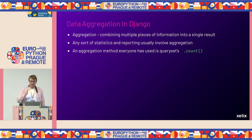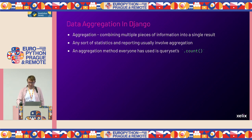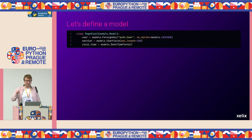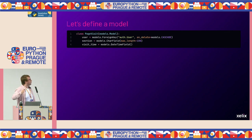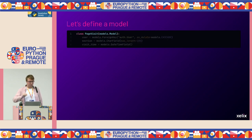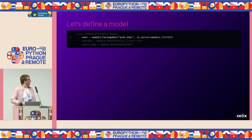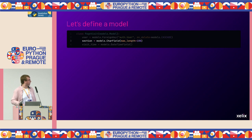Before we see examples of count and other aggregation methods, let's define a model we'll use throughout. This is a model to store individual visits a user makes to a website and individual sections. We inherit models.Model, and we've got a user, a section as a CharField — it could be an IntegerField with choices — and then we've got the exact visit time.